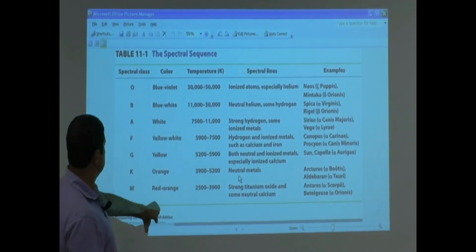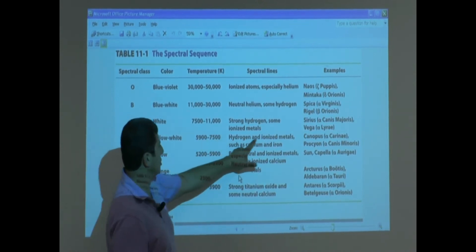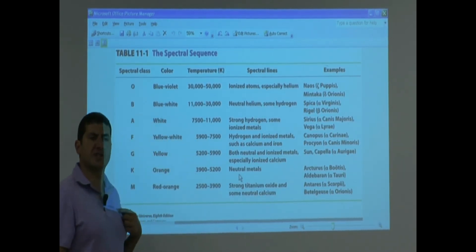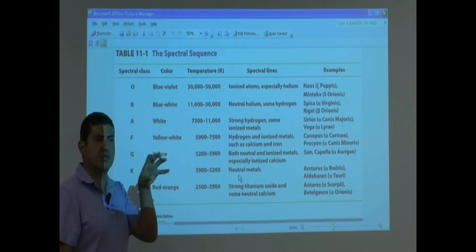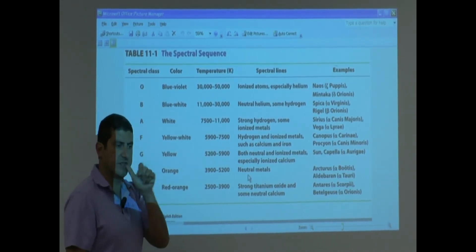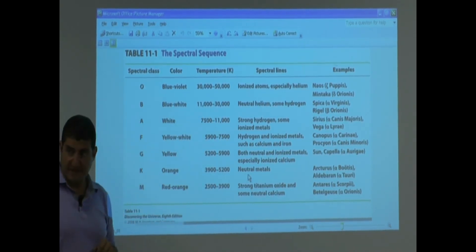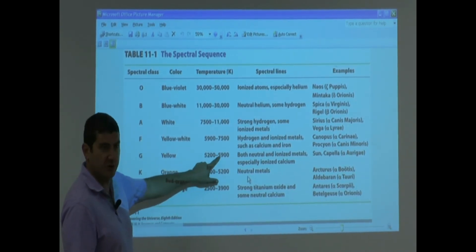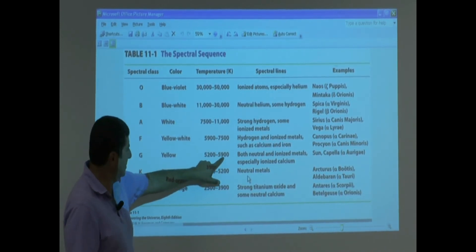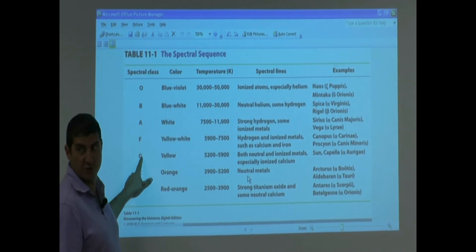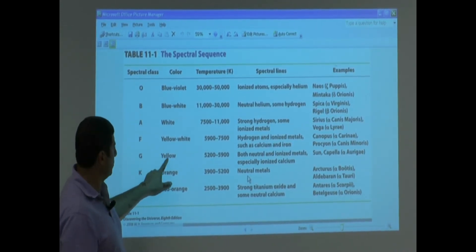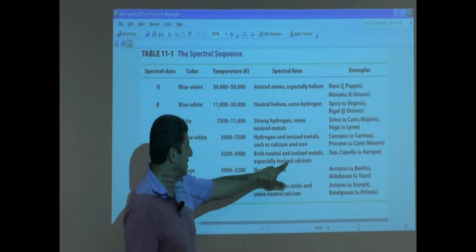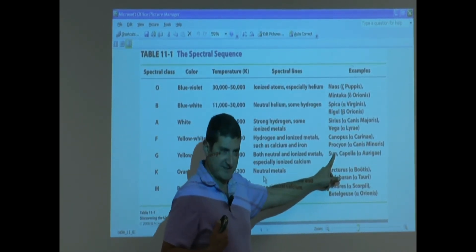And then F, yellow-white, 5,900 to 7,500. Hydrogen and ionized metal lines, such as calcium and iron. Canopus, Procyon. What was the temperature of our sun? When we first were going over the sun, we said the temperature of the sun is something. Of the surface of the sun? 5,800, to be more exact. So you see, where should our sun go? 5,200 to 5,900? Our sun goes in the closer to this end, so definitely it's a G2. G0, G1, G2. So it looks yellow. 5,200 to 5,900. It shows both neutral and ionized metal lines, especially ionized calcium. Examples of them are sun and Capella.